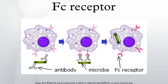The FC receptors bind the antibodies at their FC region, an interaction that activates the cell that possesses the FC receptor. Activation of phagocytes is the most common function attributed to FC receptors. For example, macrophages begin to ingest and kill an IgG-coated pathogen by phagocytosis following engagement of their FcγRIII receptors.